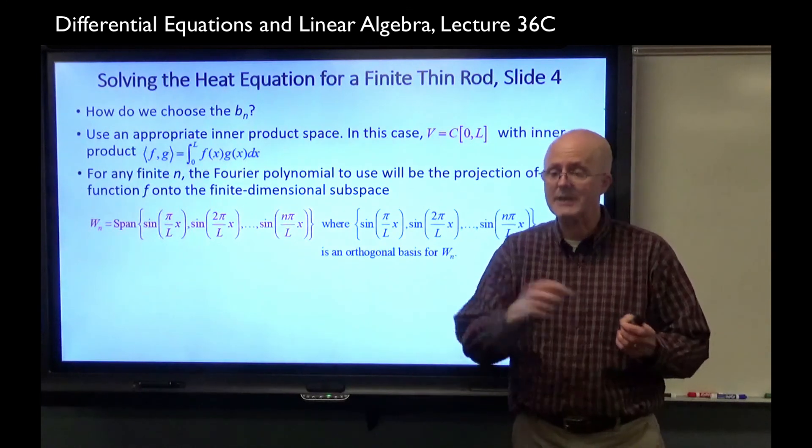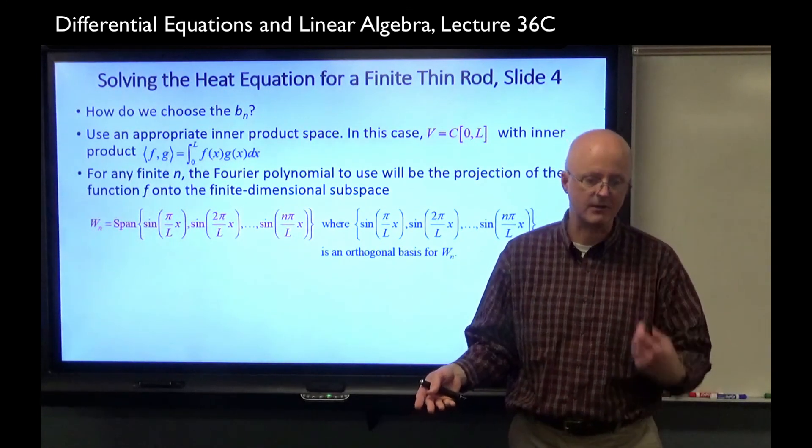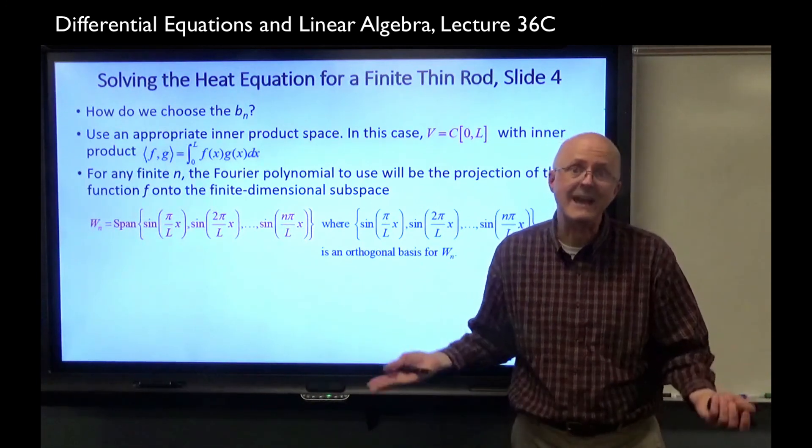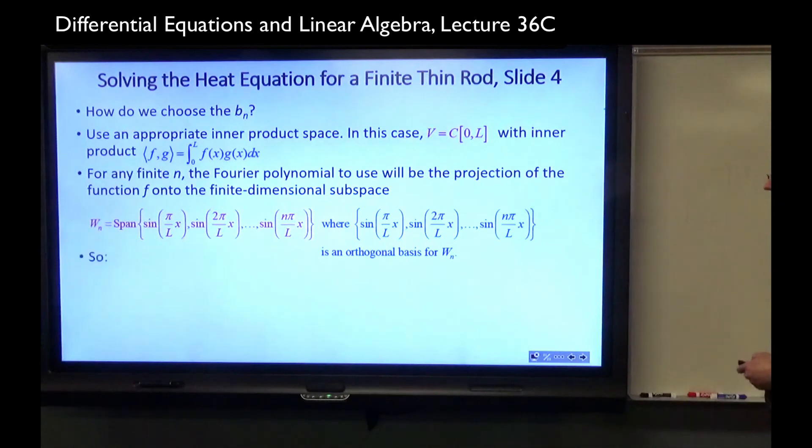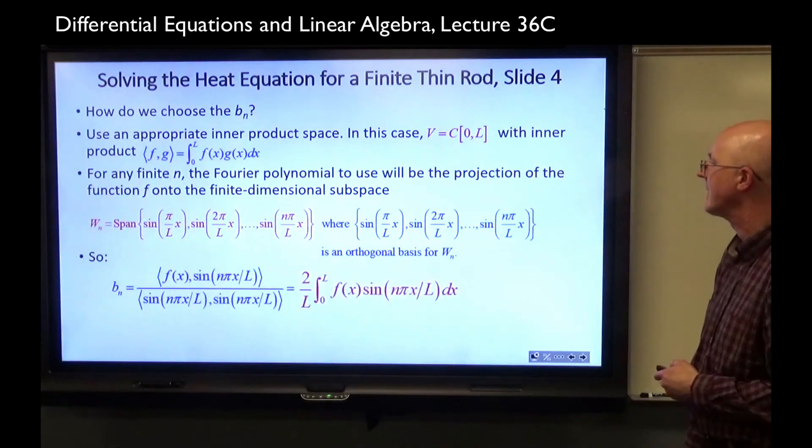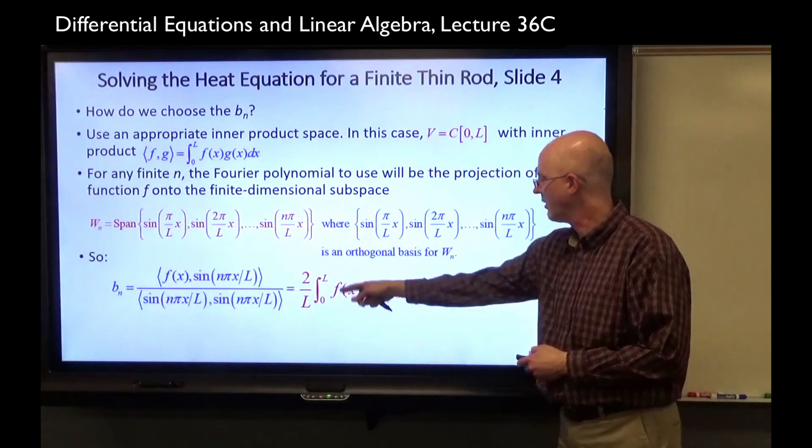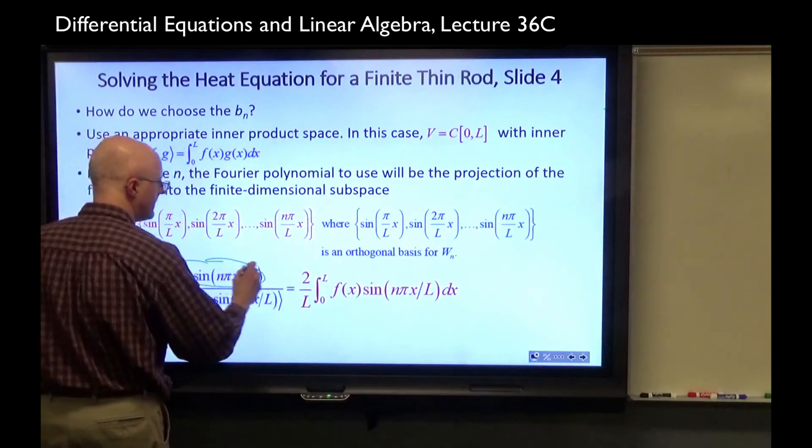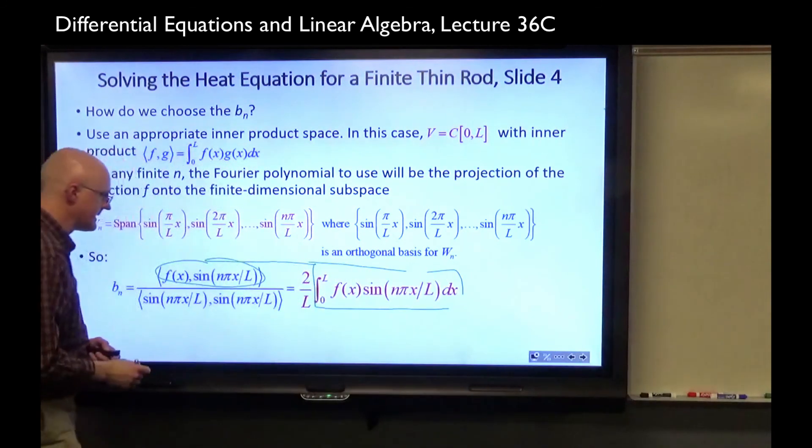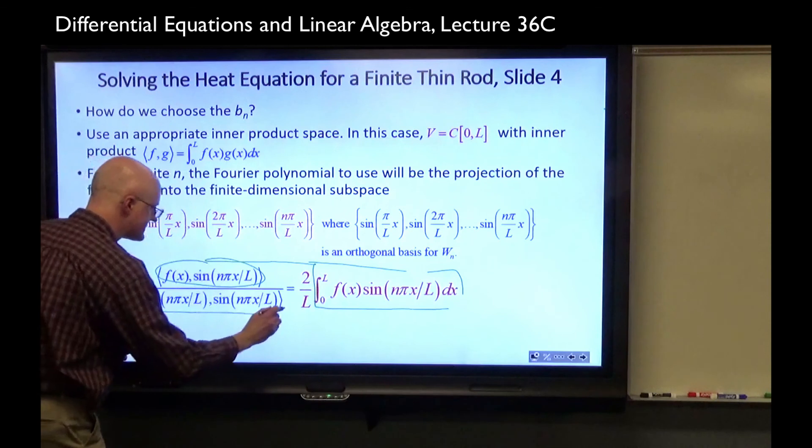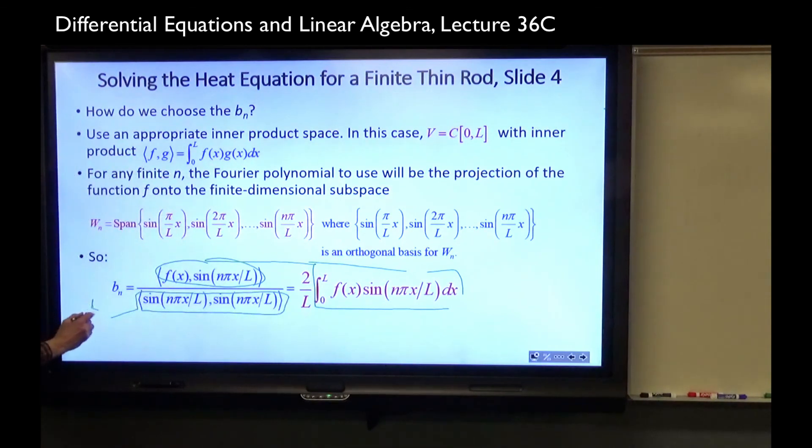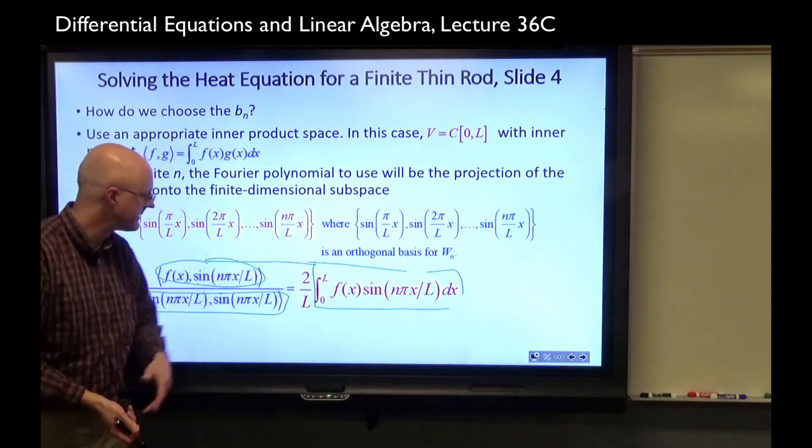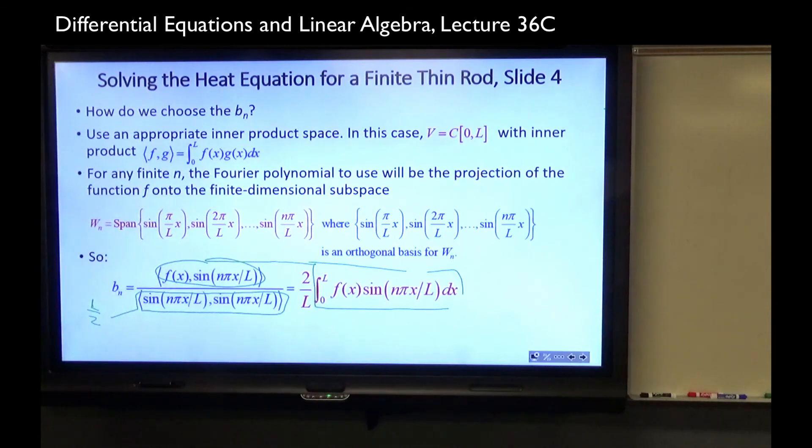Does that work with infinite sums? You can verify that it does. How do you choose the little b_n? Use an appropriate inner product space. Let V be the space of all continuous real value functions over the entire interval from zero to L, with inner product defined by this integral. For any finite n, the Fourier polynomial will be the projection of the function little f onto a finite dimensional subspace, where these sine functions form an orthogonal basis. Here is the formula for the b_n in terms of the inner product. And if you simplify this, you get this expression, two over L times the integral.